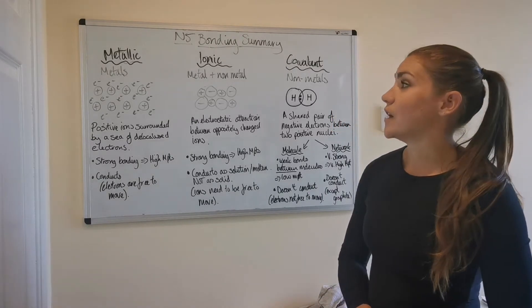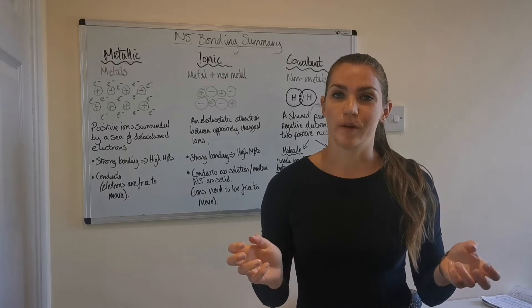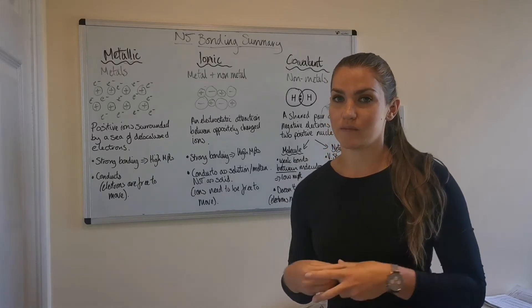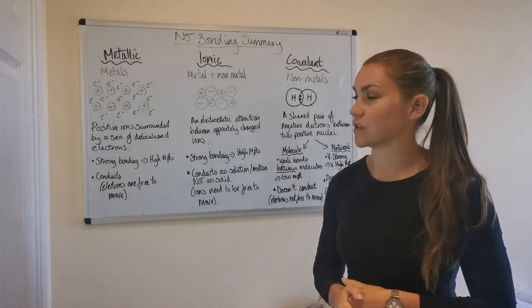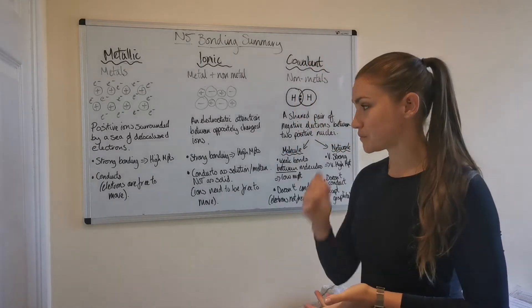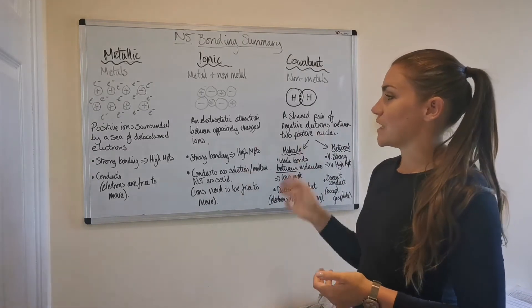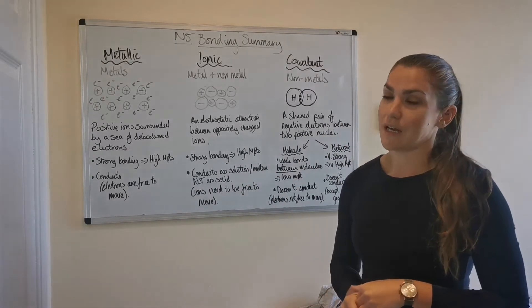So there are generally three types of bonding in compounds. Remember, compounds are where we've got different atoms joined together. In fact, some of these bondings can occur in elements as well for those elements that are diatomic and also the metal elements. So these are the three types of bonding we tend to find between atoms.